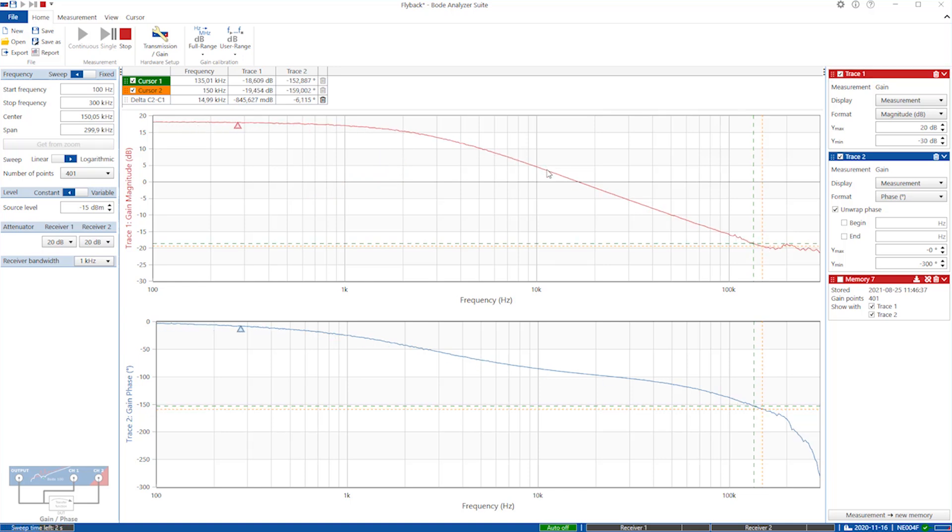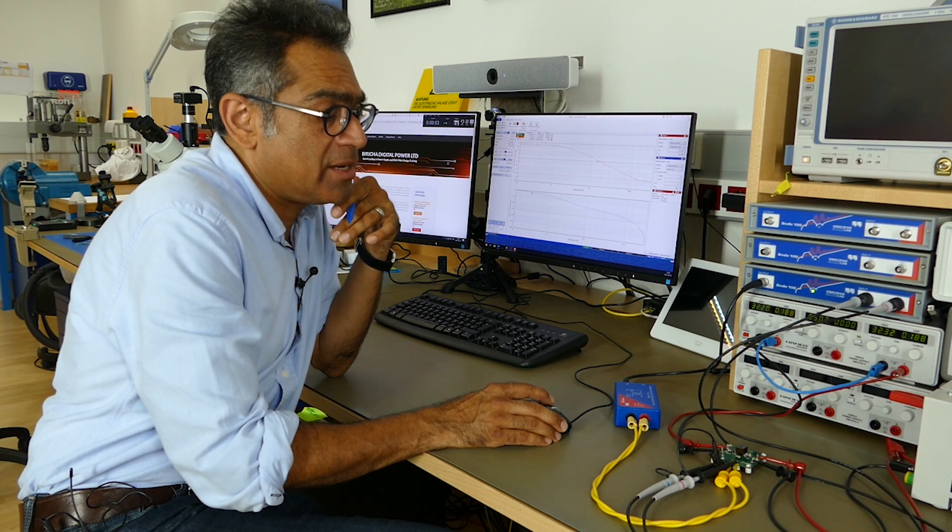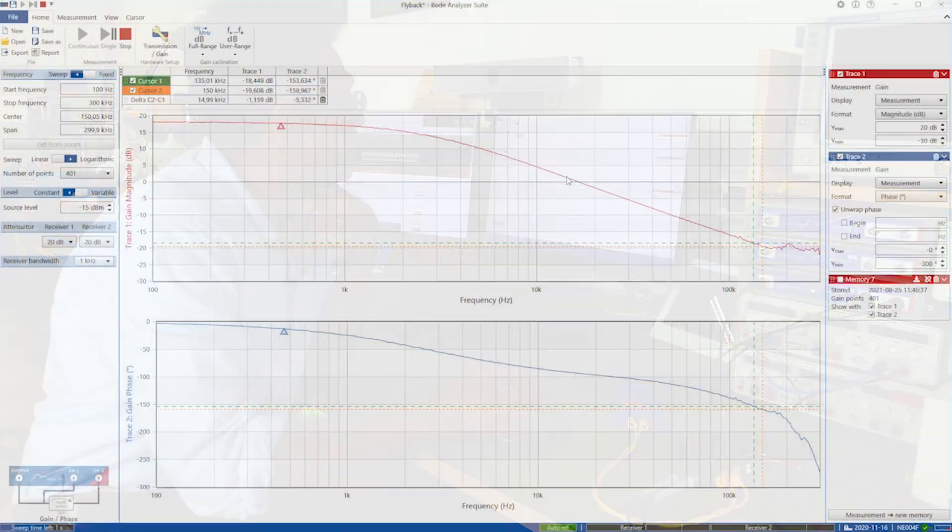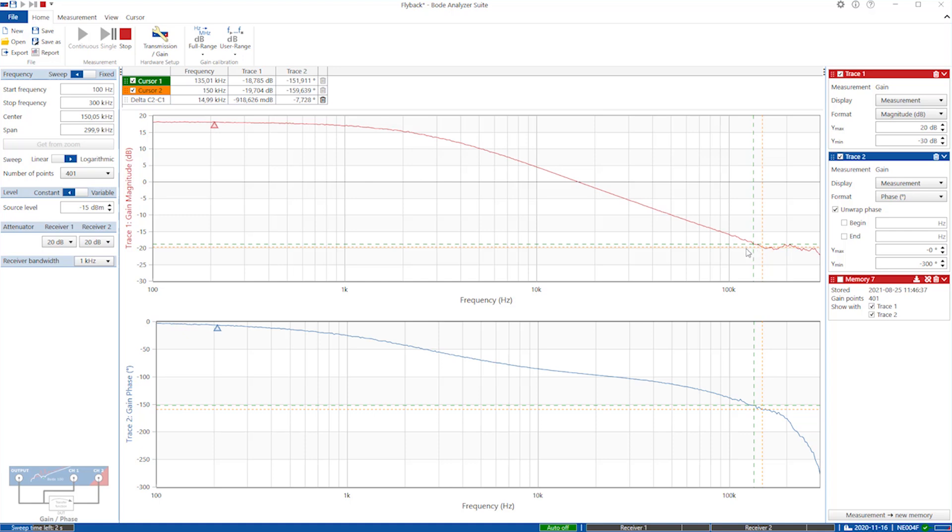We do not see at least the ESR zero in this plot, mainly because the flyback we're using has got lots and lots of ceramic capacitors as its output. However, if you look here, the gain starts to flatten. This is the effect of a zero. Now we expect from a left-hand plane zero that when you have a zero, the gain flattens and you get a phase boost of 90 degrees.